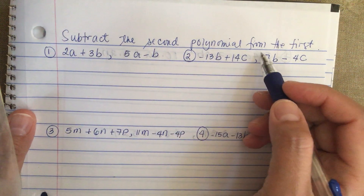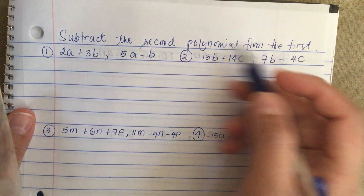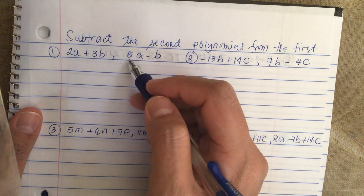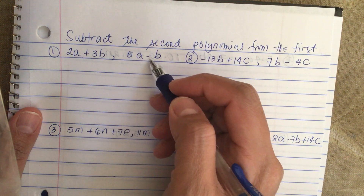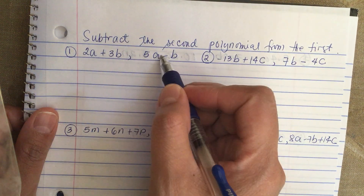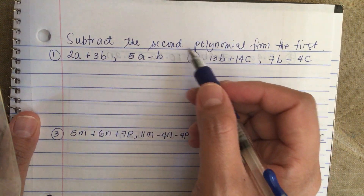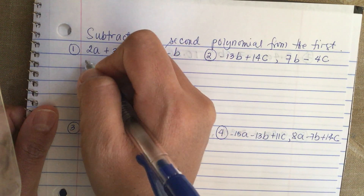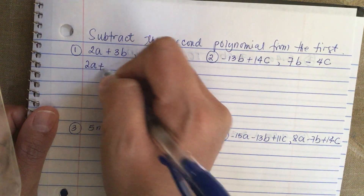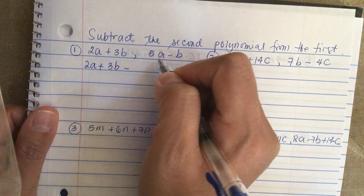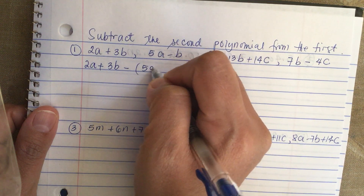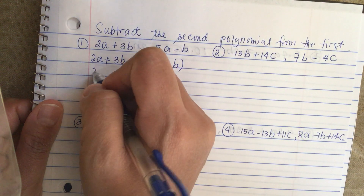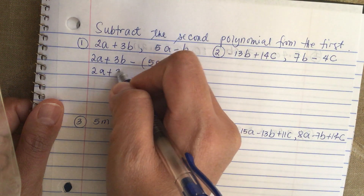Subtract the second polynomial from the first. We have 2a plus 3b and then 5a minus b. So we subtract the second polynomial from the first: 2a plus 3b minus (5a minus b). So we have 2a plus 3b.